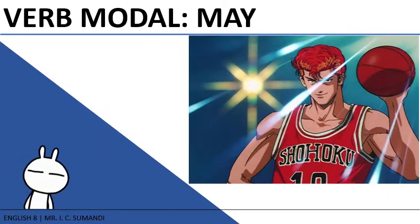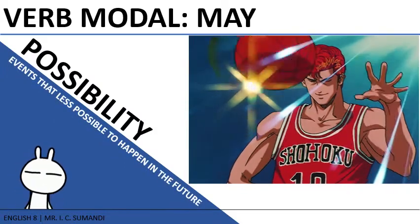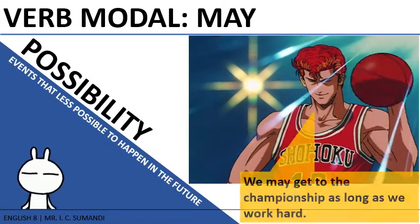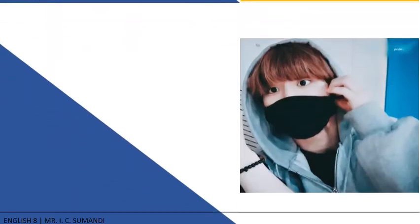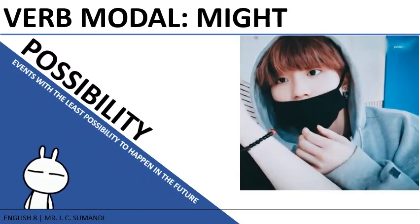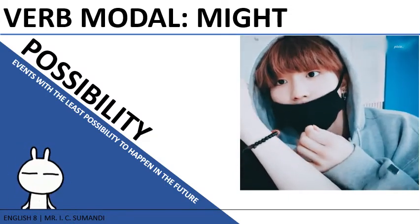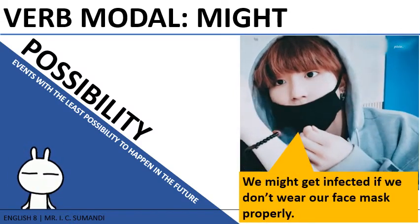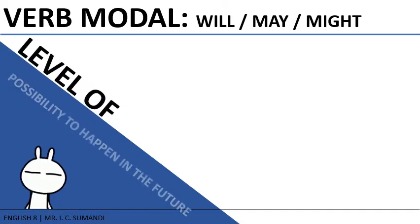Moving on, we have the verb modal may, which shows possibility of actions happening in the future. However, unlike will, may has less possibility of the action happening. Similarly, the verb modal might also gives the context of possibility, but it has the least possibility for actions to happen in the future. Comparing the three modals — will, may, and might — let's check how sure actions can happen.